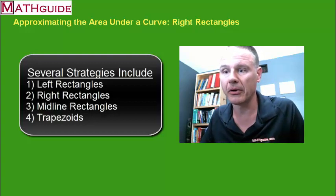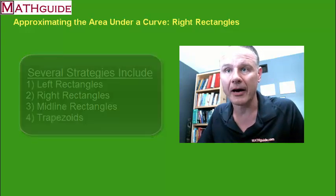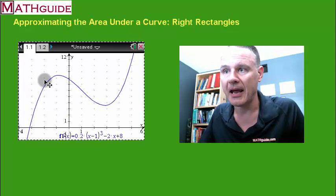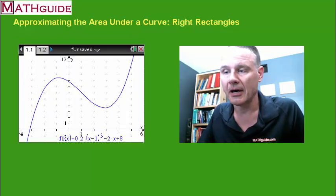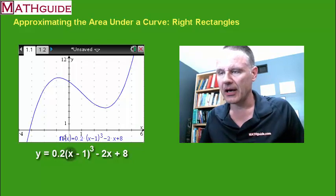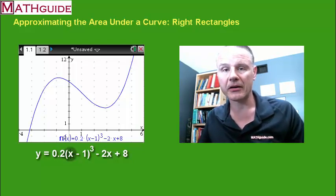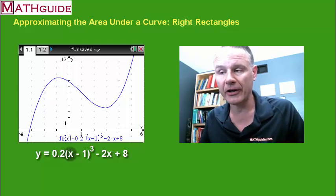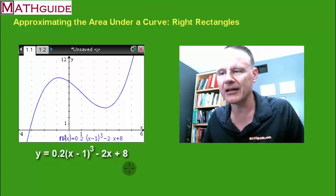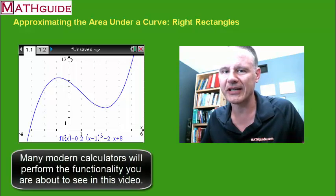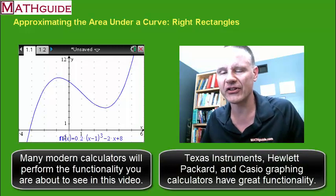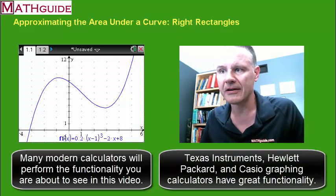In order to get the ball rolling, let's put a graph up of a particular function. Here is a graph of a function, and the equation is written really tiny, so I'll put it right there: y = 0.2(x - 1)³ - 2x + 8. I plugged this into a TI-Inspire calculator. You could use a TI-83, Hewlett-Packard, Casio—a lot of different calculators do this and have the functionality you see in this video.